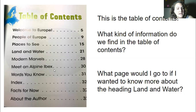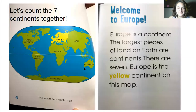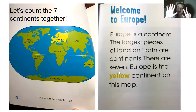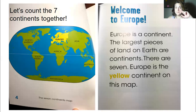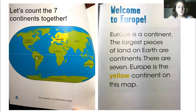If I wanted to learn about an ibex, I would go to page 30. Europe is a continent — the largest pieces of land on earth are continents. There are seven continents. Europe is the yellow continent on this map. Let's count them together: one, two, three, four, five, six, seven.